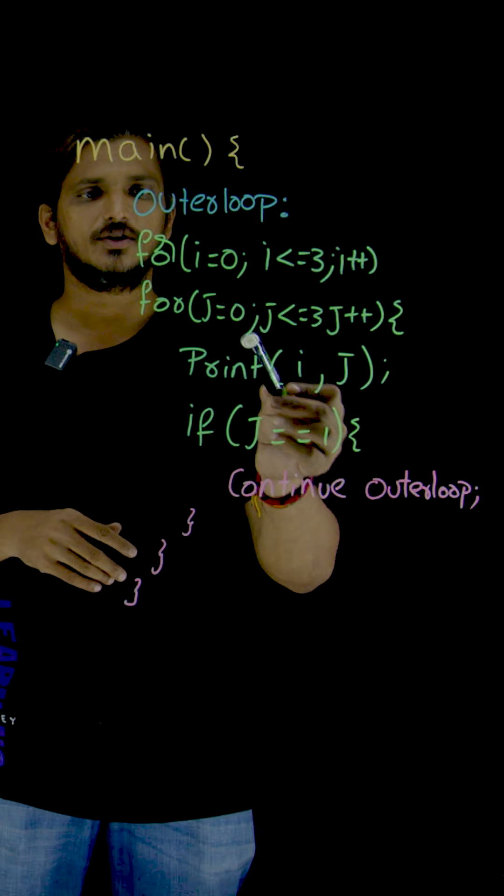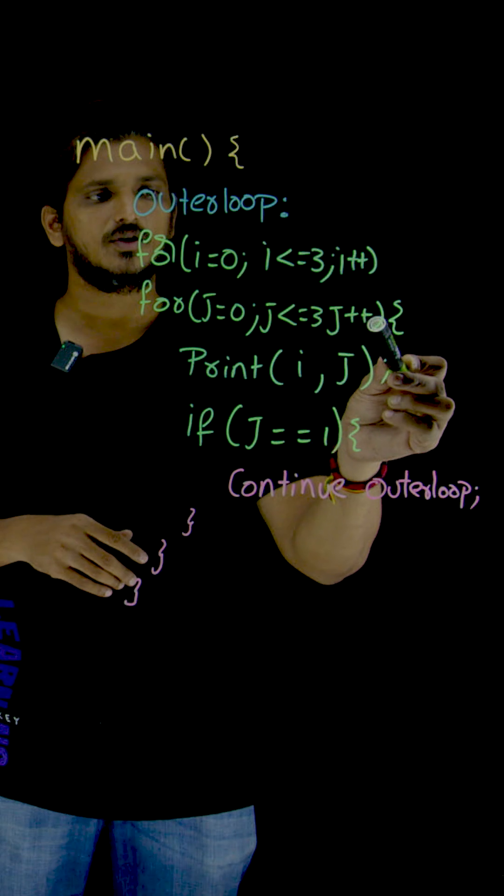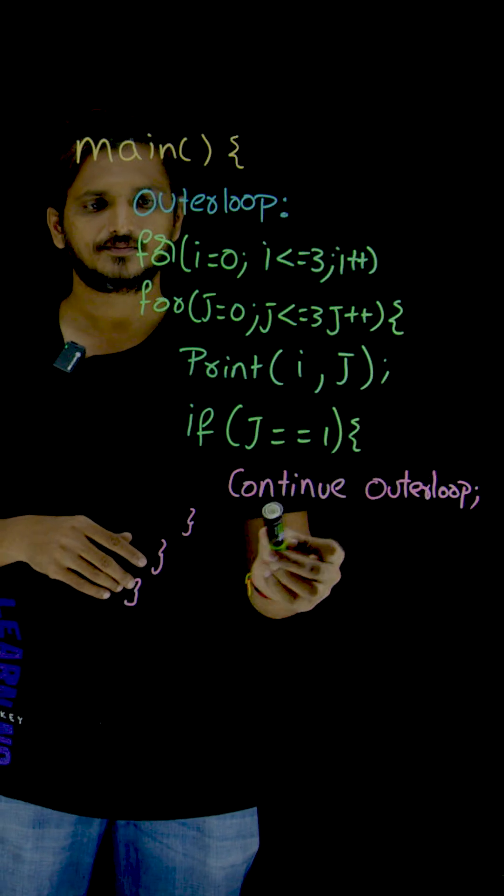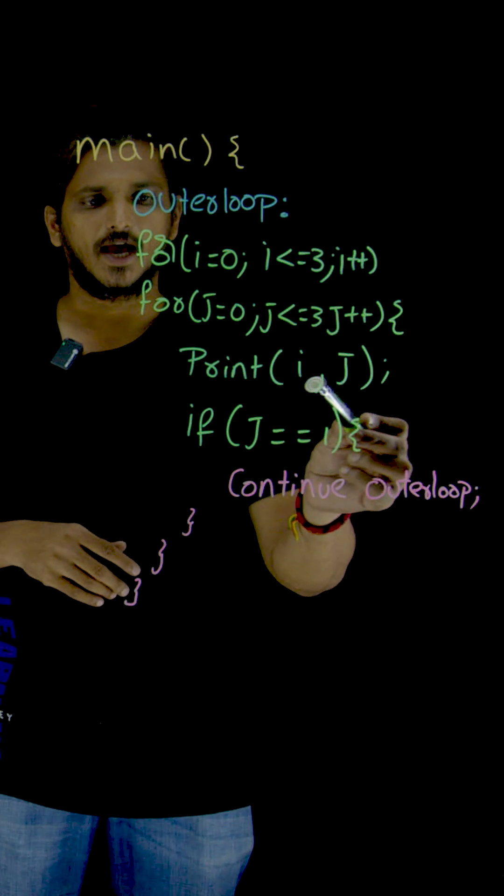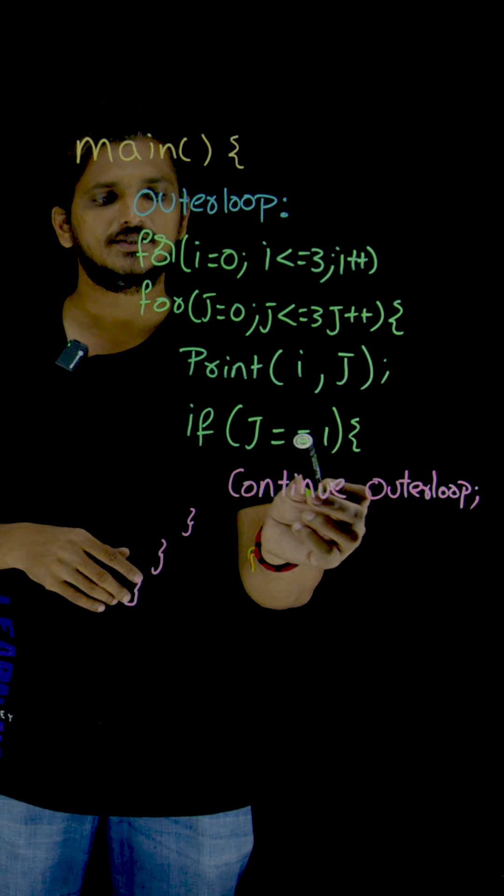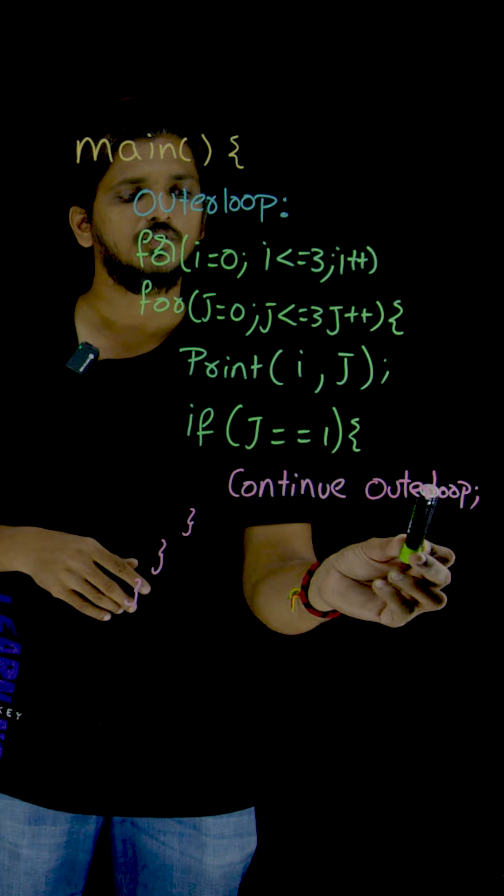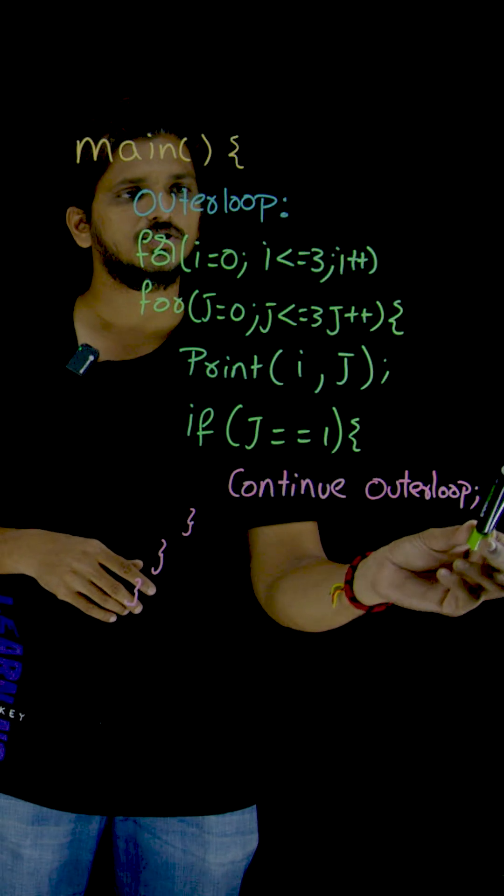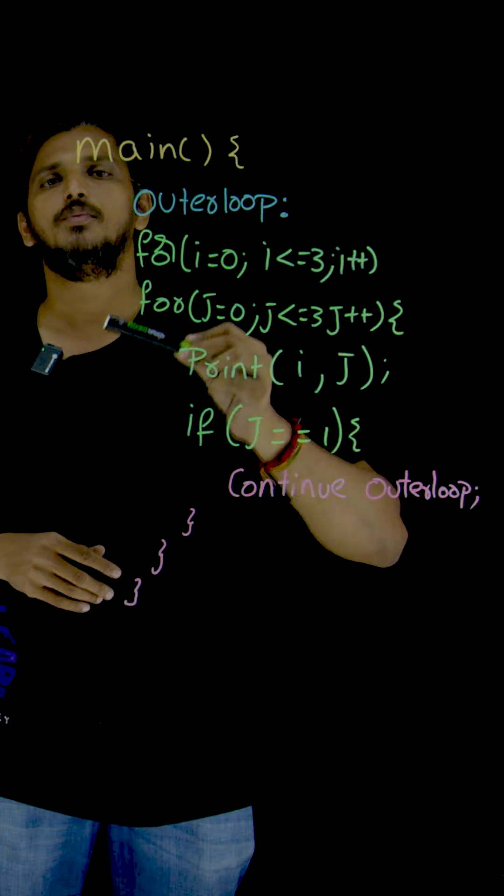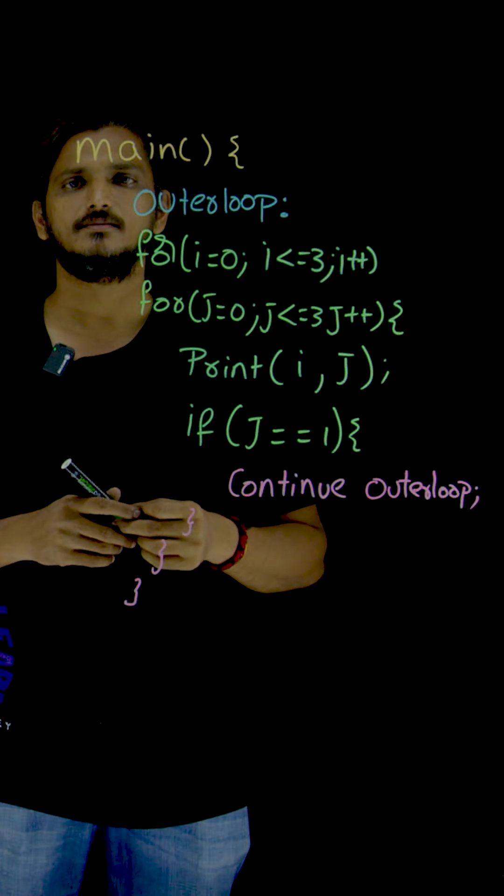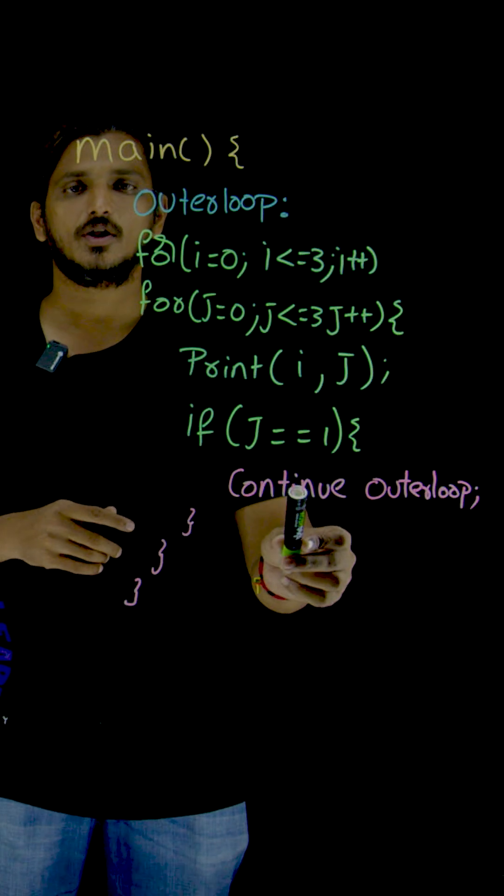See how it is executing. For j is equal to 0, j less than or equal to 3, j plus plus, it is going to display i, j. Whenever if j is equal to 1, continue outer loop. Means the execution jumps to the label. Continue outer loop.